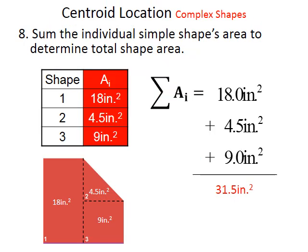Now that we have our numerator, let's work on the denominator. We've actually calculated everything we need. All we need to do is the summation part. We add the areas of all the individual shapes, which we've already calculated. So we have 18 plus 4.5 plus 9, which equals 31.5 square inches.